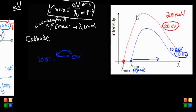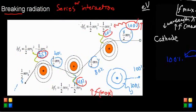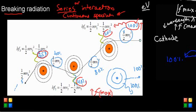If I increase the voltage in the x-ray tube, I get more energetic electrons that can produce higher-frequency photons — this shifts lambda_min further to the left. The y-axis represents how many photons are generated at each frequency, so the peak of the curve shows the most commonly produced frequency at that voltage. The critical takeaway: breaking radiation produces a series of interactions and a continuous spectrum.